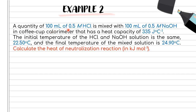Example 2: 100 mL of 0.5 M HCl is mixed with 100 mL of 0.5 M NaOH in a coffee cup calorimeter. When dealing with a coffee cup calorimeter, we usually have a neutralization reaction — acid and base reacting to form salt and water. The calorimeter has a heat capacity C of 335 J/°C. The initial temperature of both HCl and NaOH solutions is 22.50°C, and the final temperature of the mixed solution is 24.90°C. From these two values we can find ΔT. Calculate the heat of neutralization in kJ/mol.